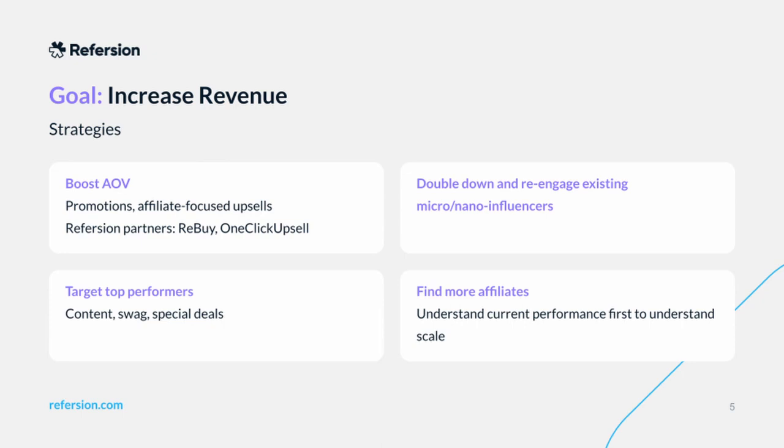If you're trying to get 226 extra conversions a month, you can talk about targeting your top performers. Maybe you have 10 top performers — can you get them an extra 25 sales a month? Maybe, maybe not, because it's important to look at the trends of those individuals too. Oftentimes people hit a plateau, and it might not be realistic to expect your top affiliates to grow their traffic further because they are what they are. That said, it's worth looking into — maybe try giving them additional content, swag, or special deals. Are there things that might further incentivize them to help you meet your goal?